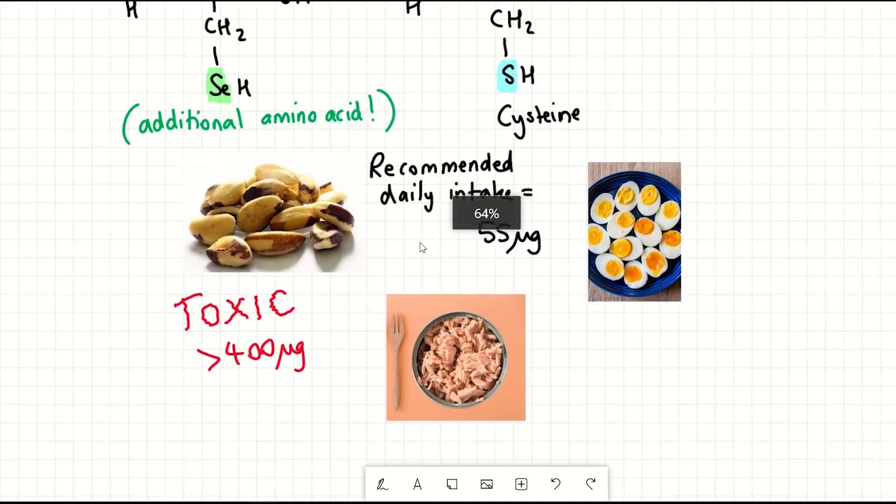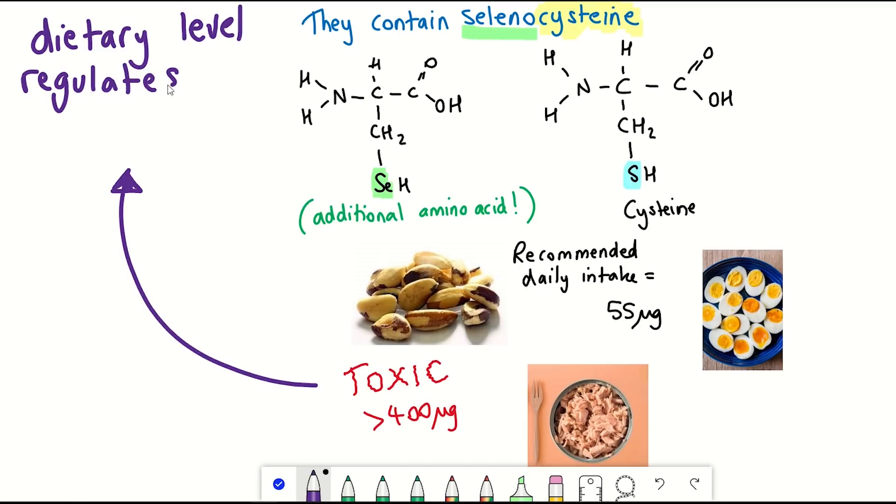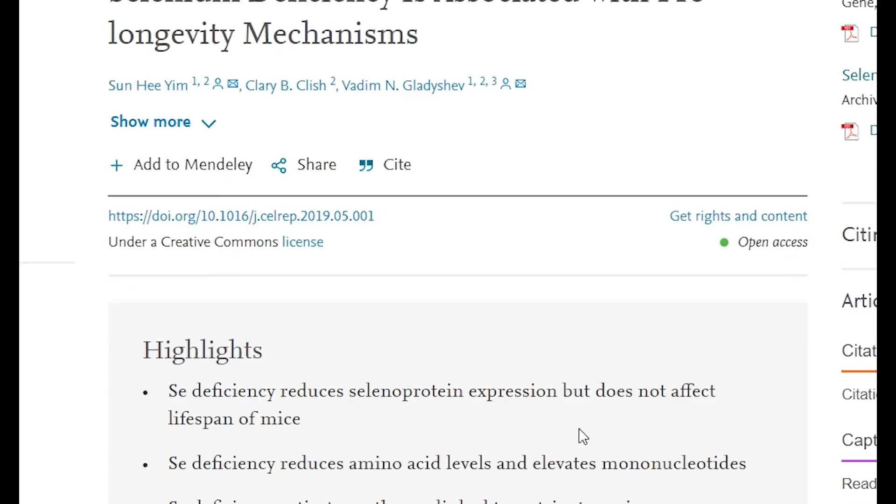It has been previously shown in mice that dietary selenium levels regulate the expression of selenoproteins, which sort of makes sense as you can't make these selenoproteins if you're deficient in selenium. But they also saw in this study that altering the intake of selenium didn't impact mouse lifespan. But the story doesn't end here.